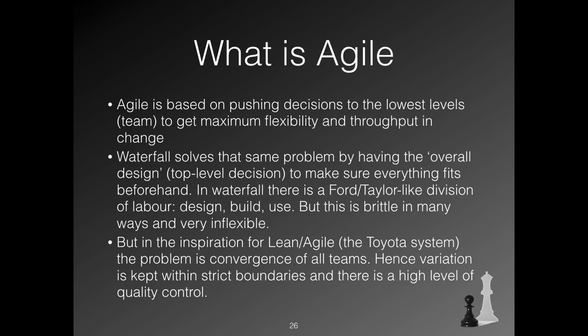Back to Agile. Agile handles complexity by creating freedom at the lowest levels of the organization. It has been inspired by lean, which comes from Toyota's manufacturing improvements. In a way, Agile is to the waterfall methods of IT change what the Toyota system was to the Taylor/Ford way of manufacturing. However, and that is a big however, people tend to forget that the Toyota system was based on strict limitations on variability and freedom — it was a sub-optimization in a setting with very specific characteristics.